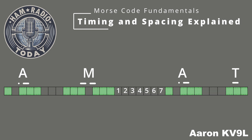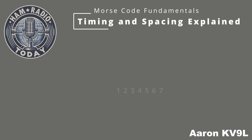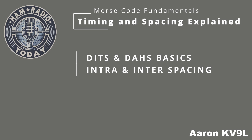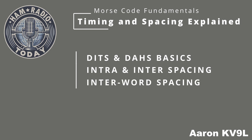By recognizing these distinct spaces, you can better appreciate how Morse code uses timing to create rhythm and clarity. That wraps up our breakdown of Morse code timing. We've covered the basics of dits and dahs, explored intra- and inter-character spacing, and even looked at the importance of inter-word spacing to keep messages clear and readable. Timing is the heartbeat of Morse code — whether you're sending a single letter or a full sentence, mastering these rhythms is the key to effective communication. Thank you for joining me. Aaron, KV9L, with Ham Radio Today.